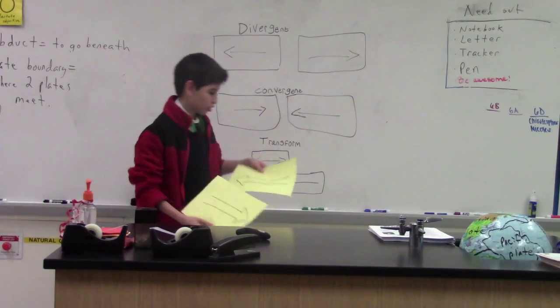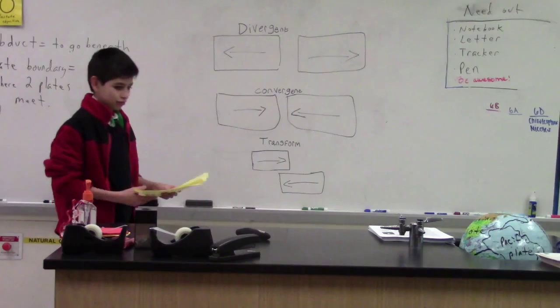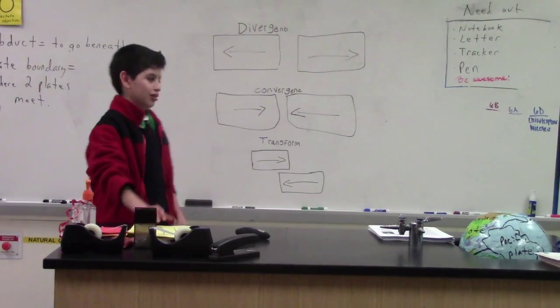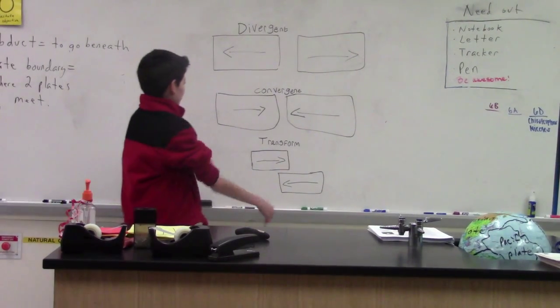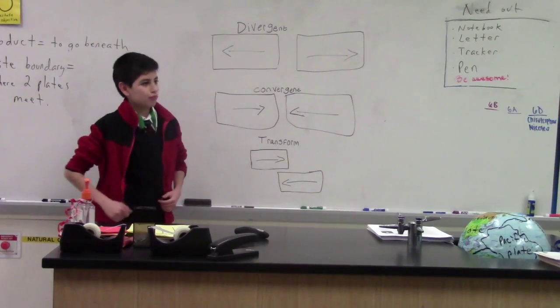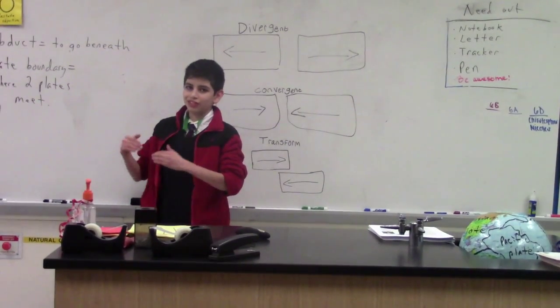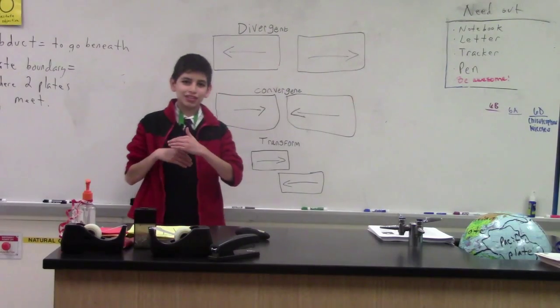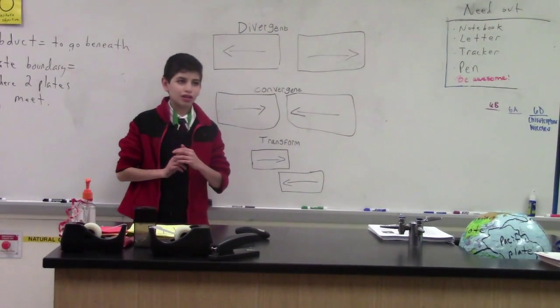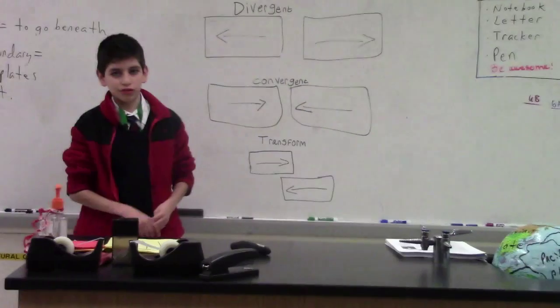To make a volcano, one plate has to go under the other plate and be subducted so magma can rise and make a hole through the crust.